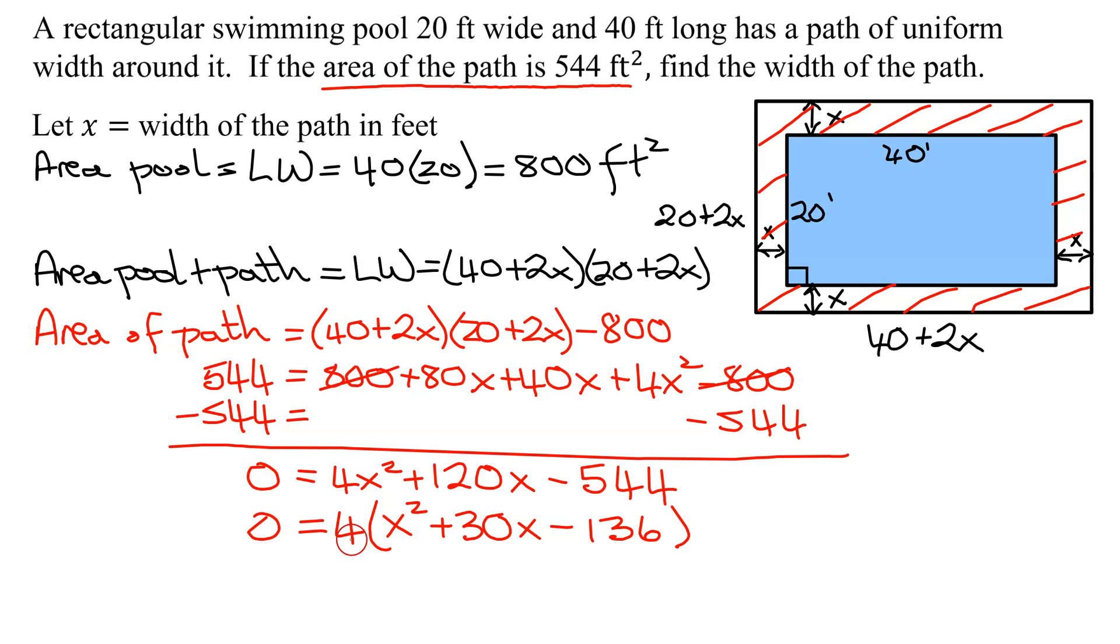So I have two factors multiplied together equal 0. You set each of them equal to 0. Well, you set 4 equal to 0, that's not possible. So I'm going to have to solve x squared plus 30x minus 136 equals 0. I'm running out of room, so I need to go to the next slide.